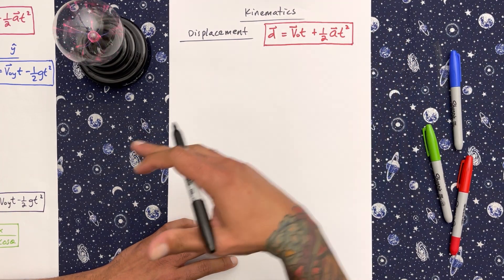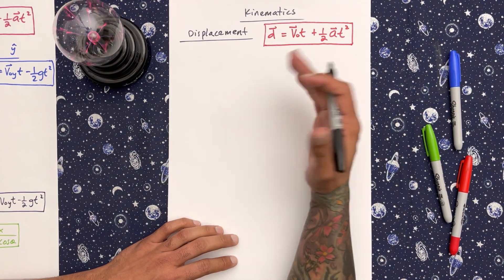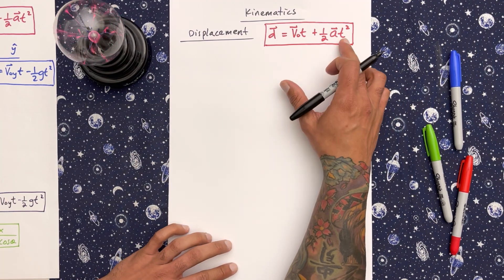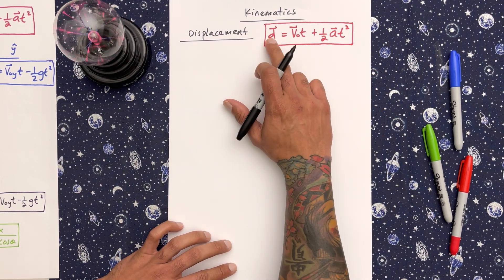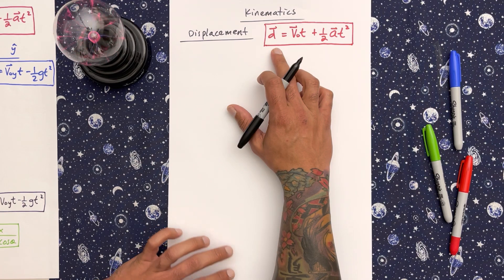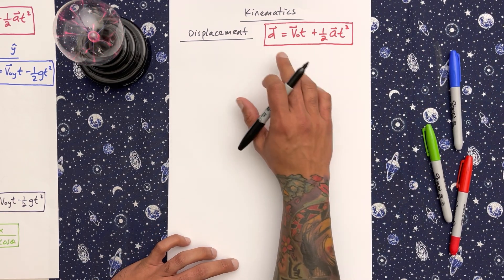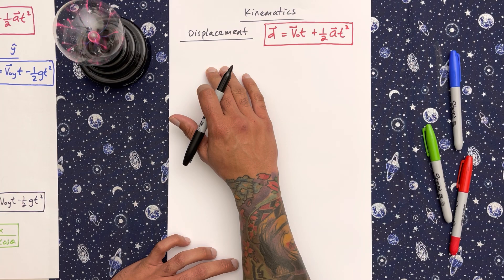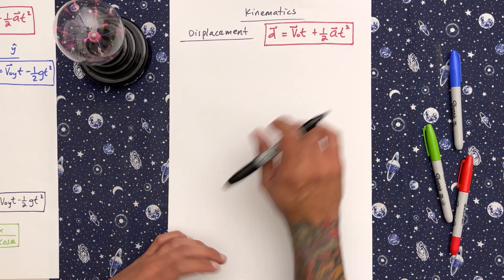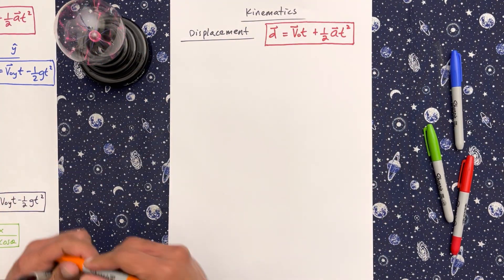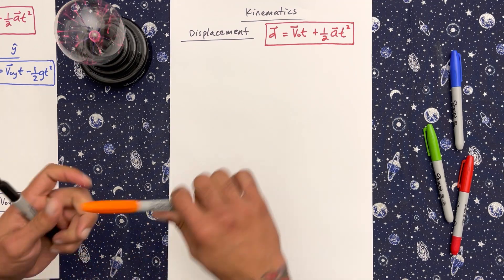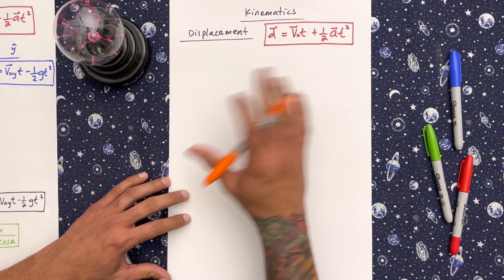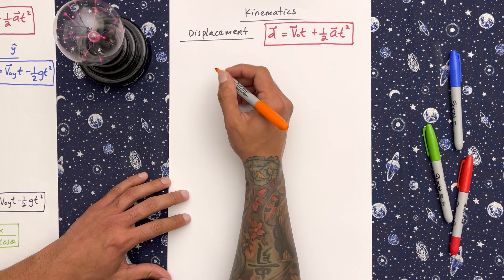This is the displacement equation. If I throw something in the air or something is rolling and I want to know its velocity, acceleration, the time it takes, or the displacement (position), this is the equation I'll use. But I'm going to break this up into the x-displacement and the y-displacement — this is where people get a little confused. You can't just use the general equation; you have to split it into x and y.